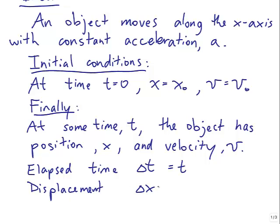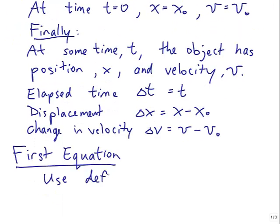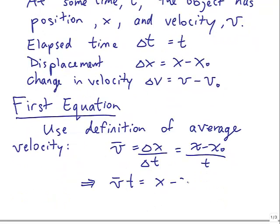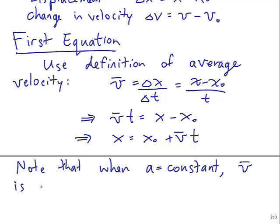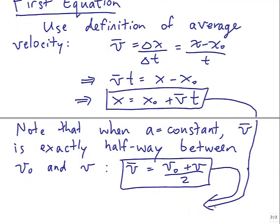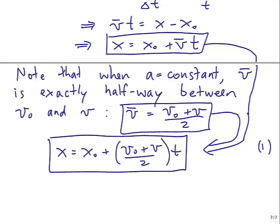The displacement delta-x is x minus x-sub-0, and the change in velocity delta-v is v minus v-sub-0. For the first equation, we use the definition of average velocity: v-bar equals delta-x over delta-t, which with our notation is (x minus x-sub-0) over t. Rearranging gives x equals x-sub-0 plus v-bar times t. When acceleration is constant, the average velocity is exactly halfway between initial and final velocity: v-bar equals (v-sub-0 plus v) over 2. Combining these gives x equals x-sub-0 plus (v-sub-0 plus v) over 2 times t — that's the first equation of constant acceleration.